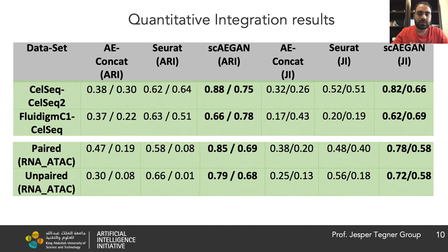Next, we quantified integration quality by measuring the transferred cell identity agreement between the translated domain and the original domain. We use two evaluation metrics: the adjusted Rand index and the Jaccard index. The results show that SEGAN outperforms other methods considerably across the various integration tasks.